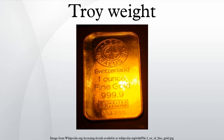Units of measurement. Troy pound: the troy pound is 5,760 grains, while an avoirdupois pound is approximately 21.53% heavier at 7,000 grains. Troy ounce: one troy ounce is equal to 31.1034768 grams, also equal to 1.09714286 avoirdupois ounces — exactly 192/175 — or about 10% larger.